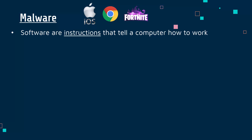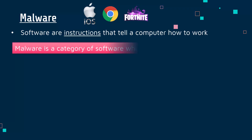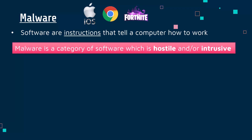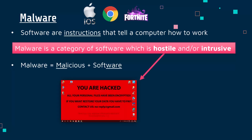Most software is perfectly legitimate. We have a subset, some category of software, which is not legitimate - it's trying to cause you harm, it's malicious. So malware is literally just a combination of two words: malicious and software. Malicious meaning it's trying to cause you some harm. So it's a type of software which is either hostile or intrusive, or often both hostile and intrusive. By hostile, I mean it's trying to cause you harm, trying to make things difficult for you, often to quite an extreme extent.